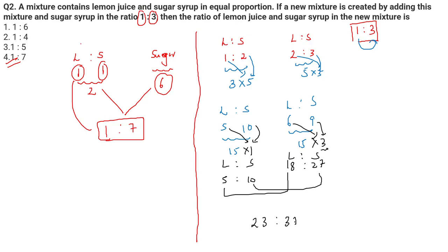So the final ratio of lemon to sugar in the mixture is 23:37. What we learn: if you're mixing a pure component into an impure component, you can use C1V1 = C2V2 or the second direct approach. But when mixing two impure components, C1V1 = C2V2 doesn't work. Instead, first make the total quantity the same for both mixtures, then take them in the required ratio.